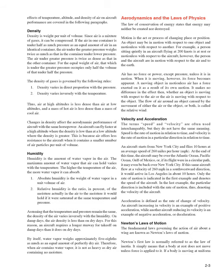Humidity: Humidity is the amount of water vapor in the air. The maximum amount of water vapor that air can hold varies with the temperature; the higher the temperature, the more water vapor it can absorb. Absolute humidity is the weight of water vapor in a unit volume of air. Relative humidity is the ratio, in percent, of the moisture actually in the air to the moisture it would hold if saturated at the same temperature and pressure. Assuming temperature and pressure remain the same, the density of air varies inversely with the humidity. On damp days, air density is less than on dry days, so an aircraft requires a longer runway for takeoff. Water vapor weighs approximately 5/8 as much as an equal amount of dry air, so air containing water vapor is not as heavy as dry air.